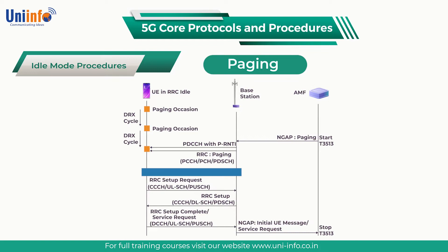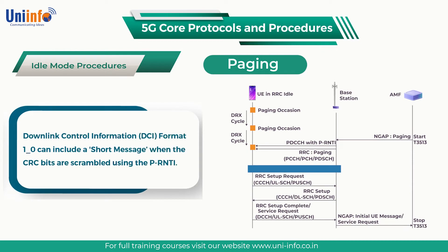This additional category is applicable when there is a requirement to notify UEs of a change to the system information or an incoming ETWS or CMAS message. In these cases, the paging procedure does not use NGAP nor RRC paging messages. Instead, the paging procedure uses only the payload of the PDCCH downlink control information DCI format 1_0, which can include a short message when the CRC bits are scrambled using the P-RNTI.